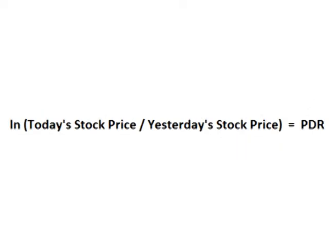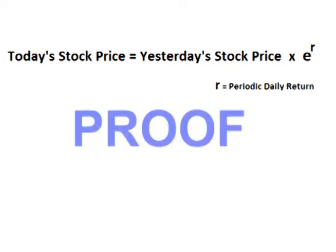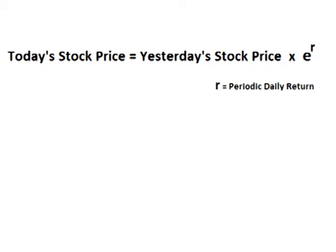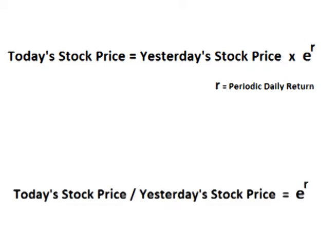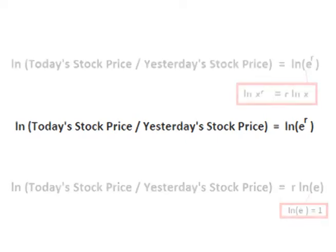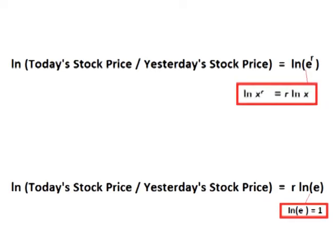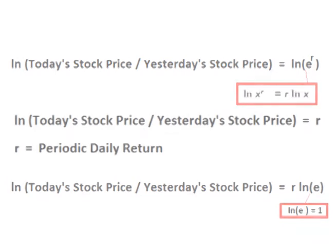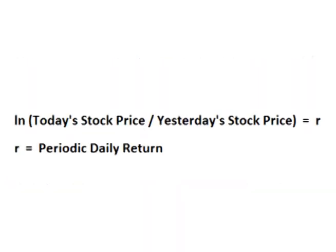To do this, we take the natural log of the daily closing price divided by the previous day's closing price. Today's stock price equals yesterday's stock price times E raised to R. If we divide both sides by yesterday's closing price, we get today's closing price divided by yesterday's closing price equals E raised to R. If we take the natural log of both sides, we get the natural log of today's price divided by yesterday's price equals R.